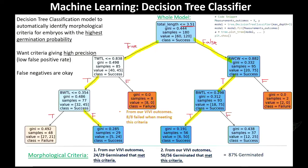Our collaborators have an automated fluidic system which mass produces these embryos, but it needs a way of sorting ones that will germinate from ones that won't. They want morphological criteria, and a decision tree automatically gives you these criteria as part of the training process. So we can choose certain criteria which have a high success rate for germinating.